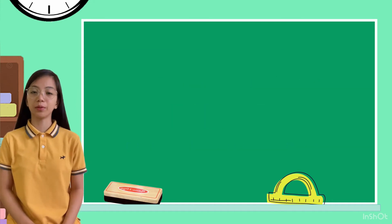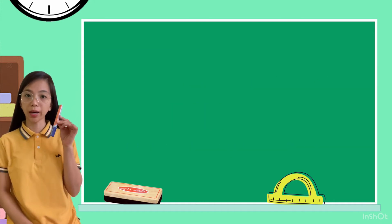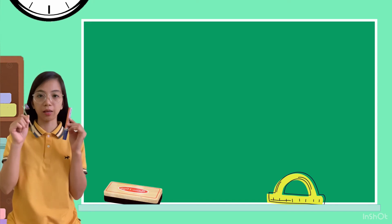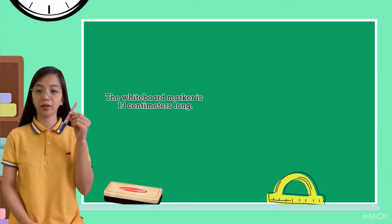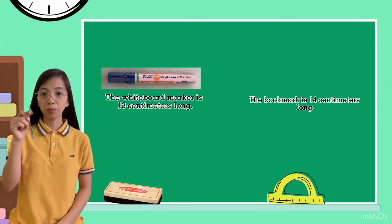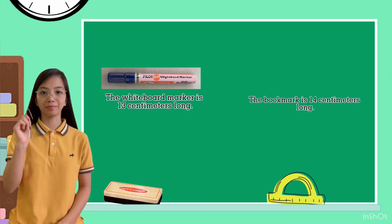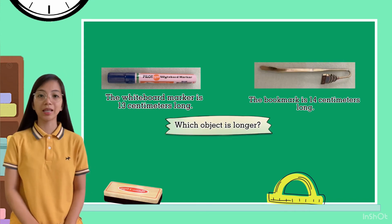Another example I have here, a whiteboard marker and a bookmark. The whiteboard marker is 13 centimeters long. The bookmark is 14 centimeters long. Which object is longer?